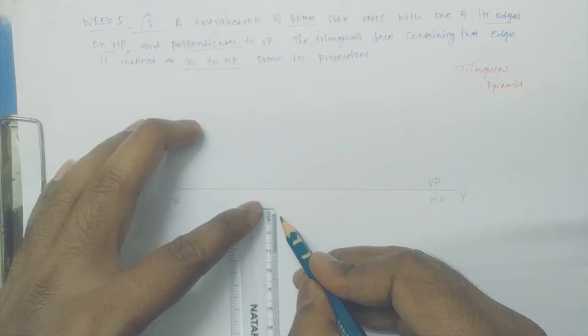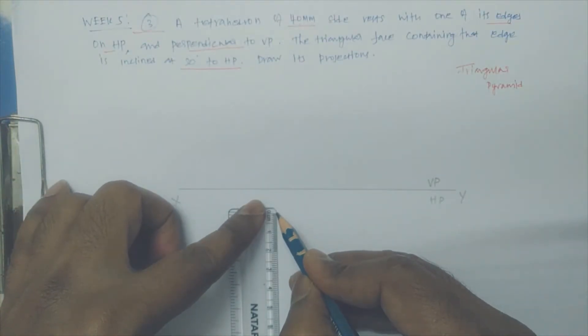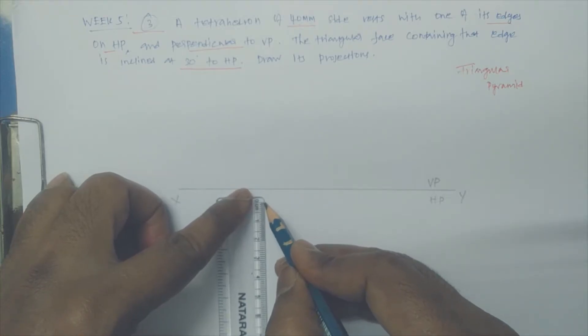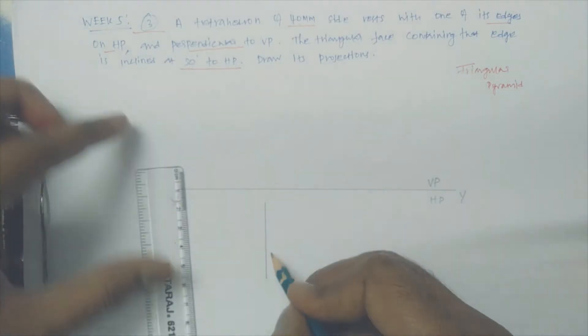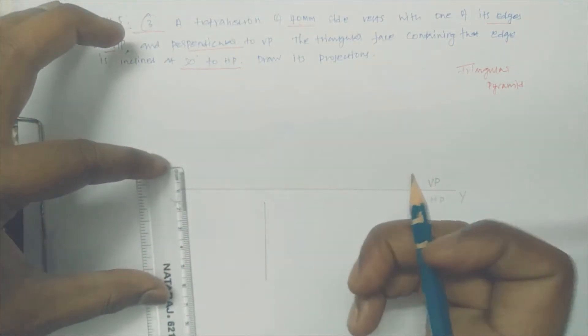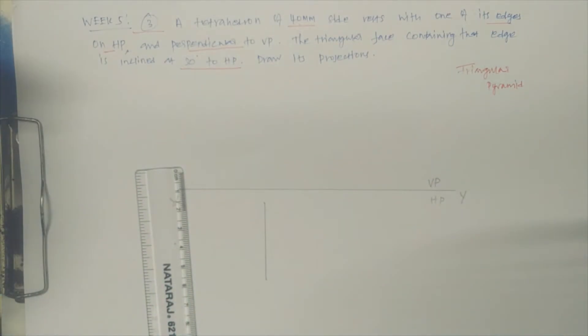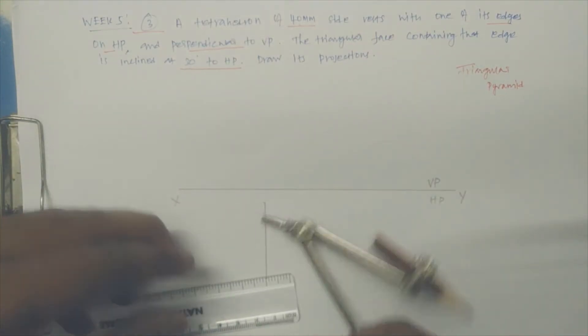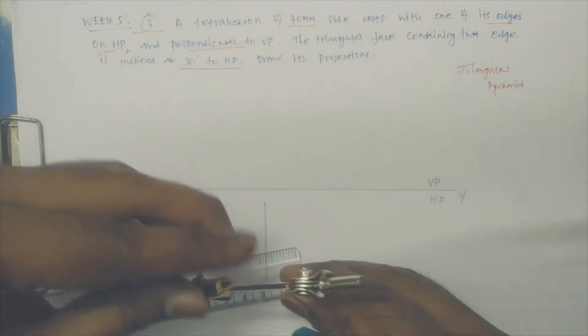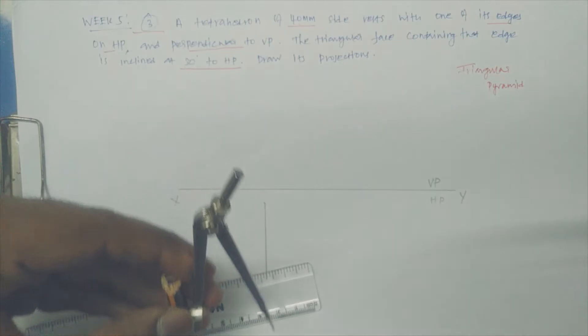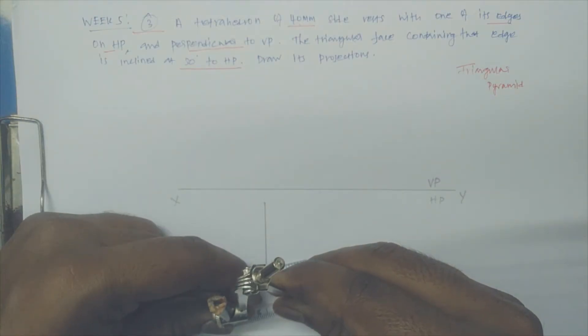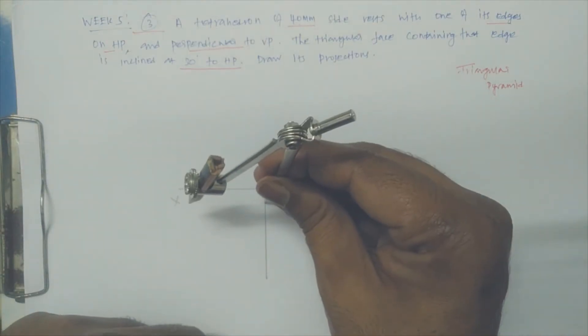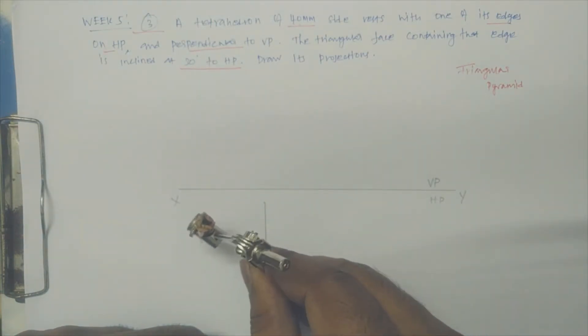Let us draw the tetrahedron simple position. For that, the base is 40mm. Let me draw 40mm. There is a reason I kept to 40mm like this, because this only we're going to tilt for 30 degrees, and all remaining sides are also 40mm.